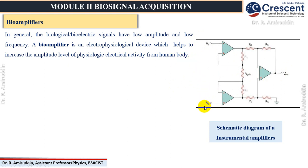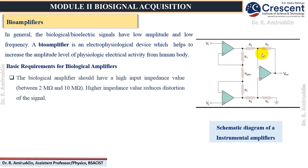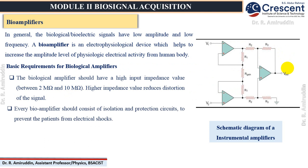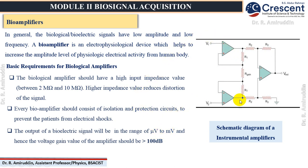This bio-amplifier is an electrophysiological device — in other terms, it is a circuit consisting of op-amps. There are some basic requirements of biological amplifiers. First, the biological amplifier setup should have a high input impedance value ranging from 2 mega-ohms to 10 mega-ohms. Such high input impedance reduces the distortion level of the input signal. Second, there should be a proper isolation circuit and protection circuit so that the patient is restricted from any kind of electrical shock. The output signal will be in the range of micro-volt to millivolt, and hence this bio-amplifier should have a high voltage gain in the order of 100 decibels.